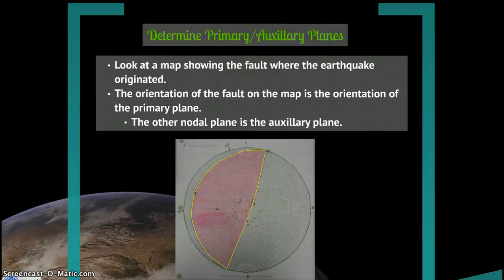So now you'll determine the primary and auxiliary planes. To do this, you'll look at a map showing the fault where the earthquake originated. This may take some geologic knowledge. For mine, I know that Japan occurs in a subduction zone, and the subduction zone runs more similar to this first nodal plane that I plotted.